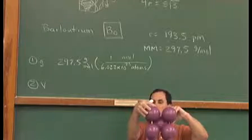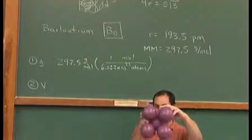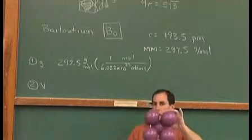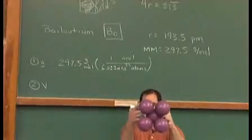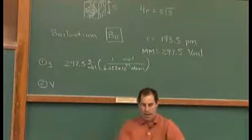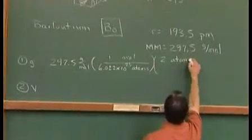That's not helpful though. We're not calculating the density of the atom, we're calculating the density of the metal, which includes the empty space that's contained inside the unit cell. So we're going for how much the entire unit cell weighs. A BCC unit cell has two atoms inside of it.